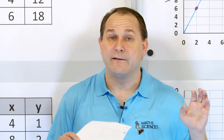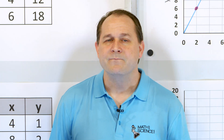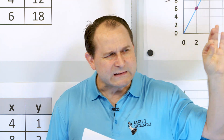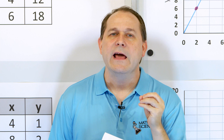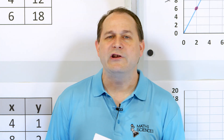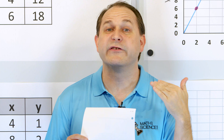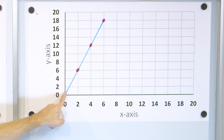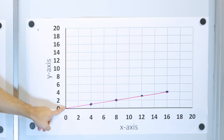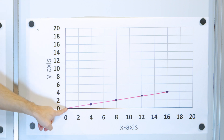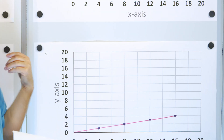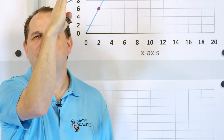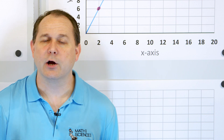Now, the constant of proportionality for points on a line that intersects the origin also has another meaning: it's what we call the slope of a line. Think about steepness — one line looks very steep, and another is not quite as steep. A flat road has no slope, but going up a mountain is a very steep slope.